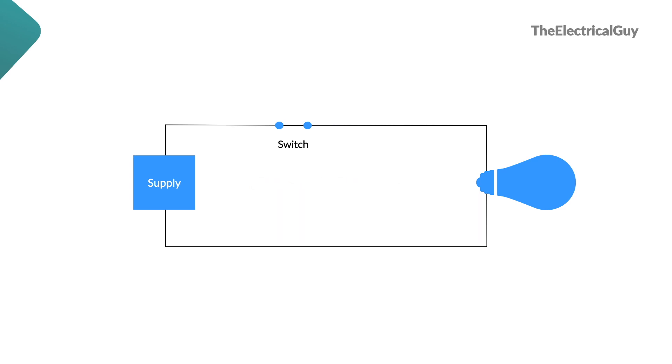Now many people get confused between closed circuit and short circuit. Both the terms are different of course. Closed circuit is a perfectly normal condition, whereas short circuit is an abnormal condition in which current gets abnormally high. We will learn in detail about short circuit in our next video.